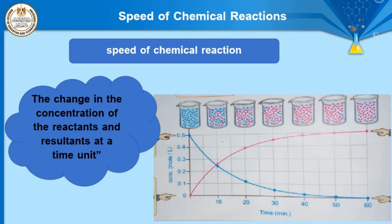So the speed of the chemical reaction can be defined as the change in the concentration of the reactant and product per unit time. The concentration of reactant decreases while the concentration of product increases over time, as seen in the graph.